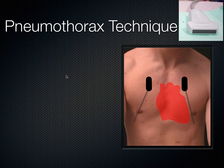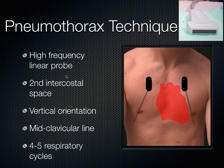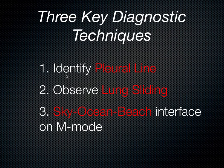We use a linear probe because we want to see the pleural line — it's very superficial and you need to see the detail. Place the probe in the cephalocaudal orientation with the indicator towards the head, then essentially march down the chest looking at the pleural line as you go, avoiding the edge of the heart. What you're looking for is the pleural line to be sliding.